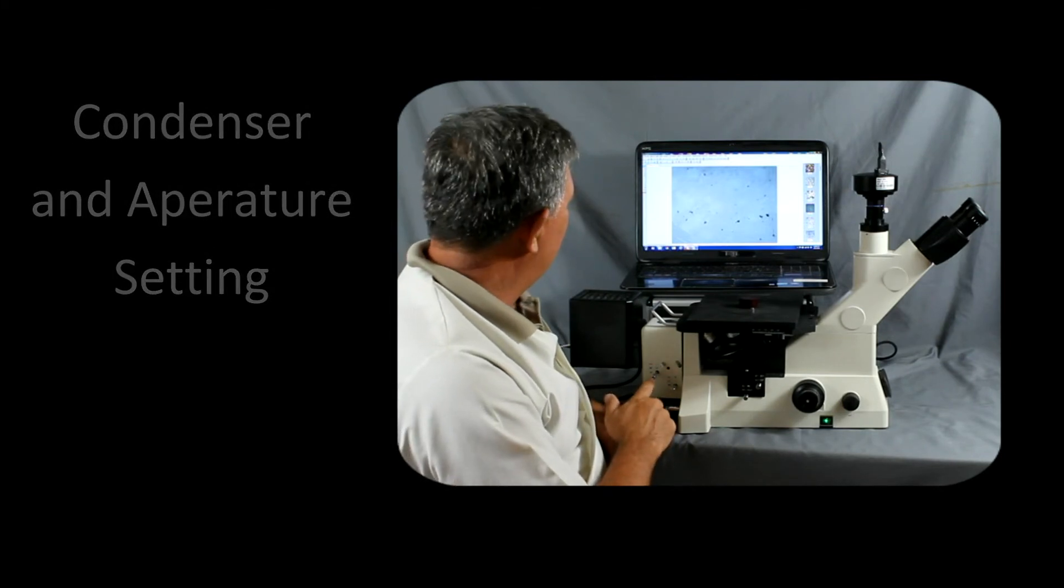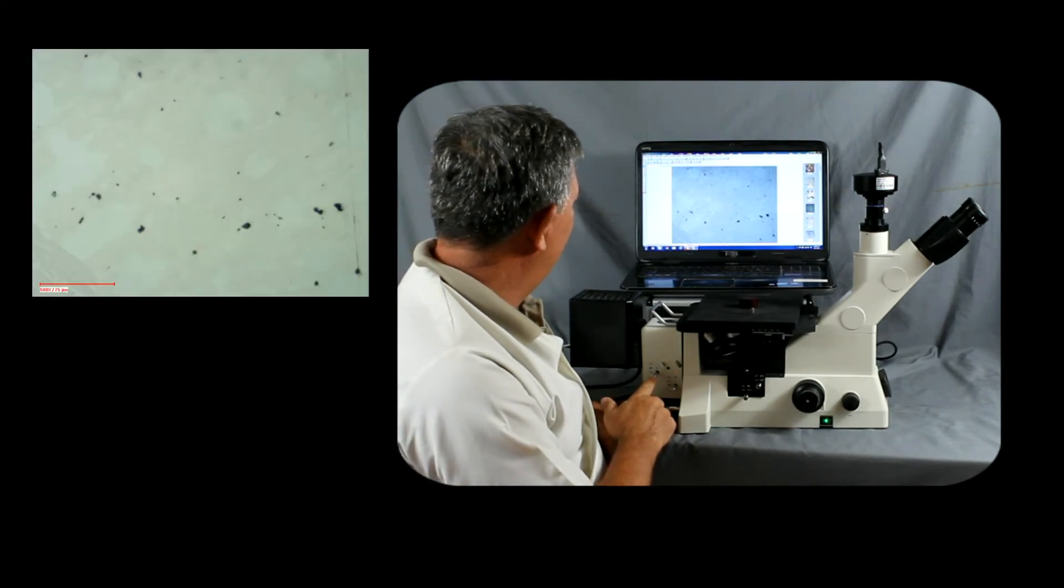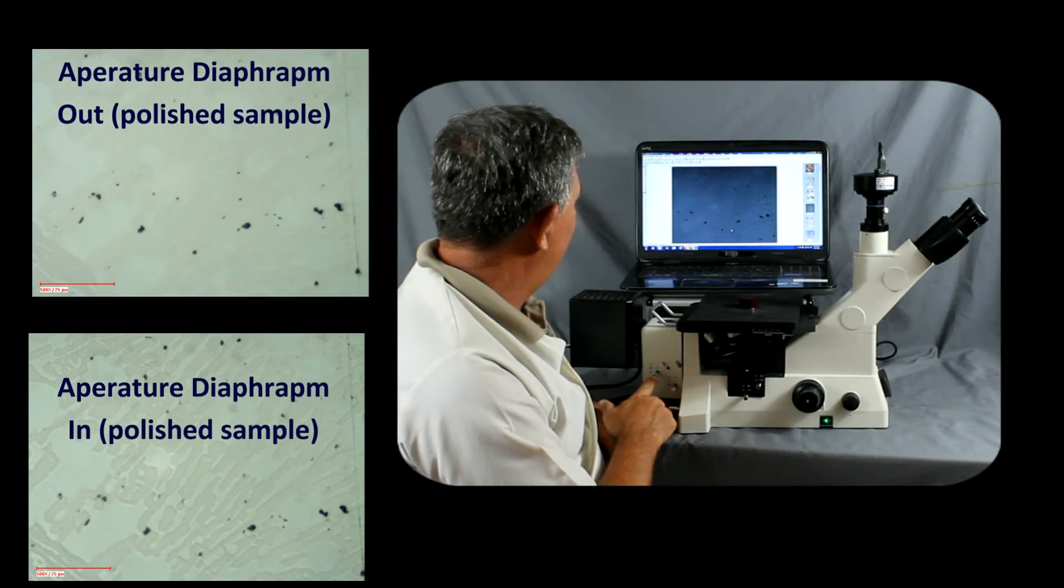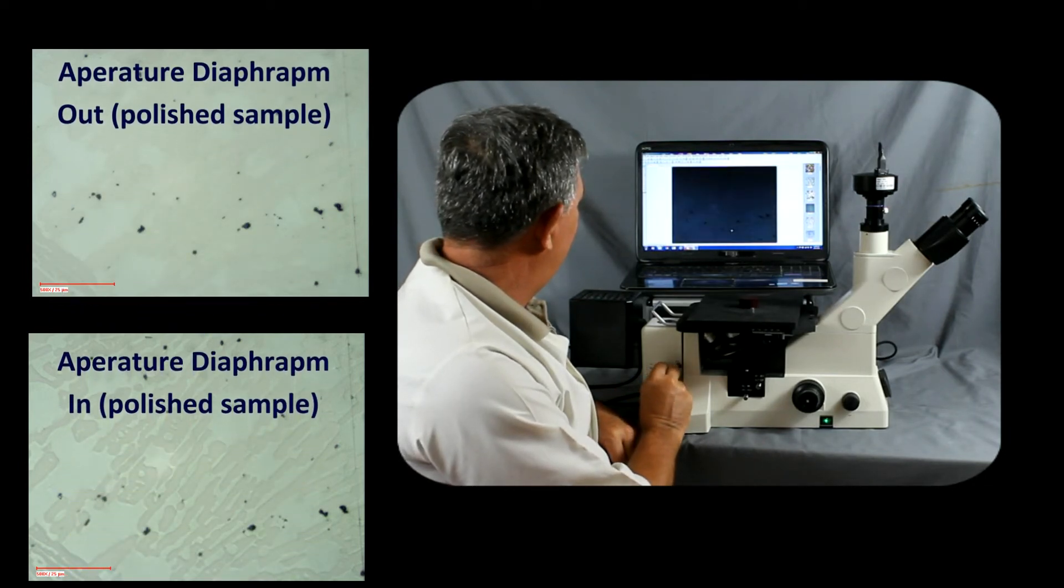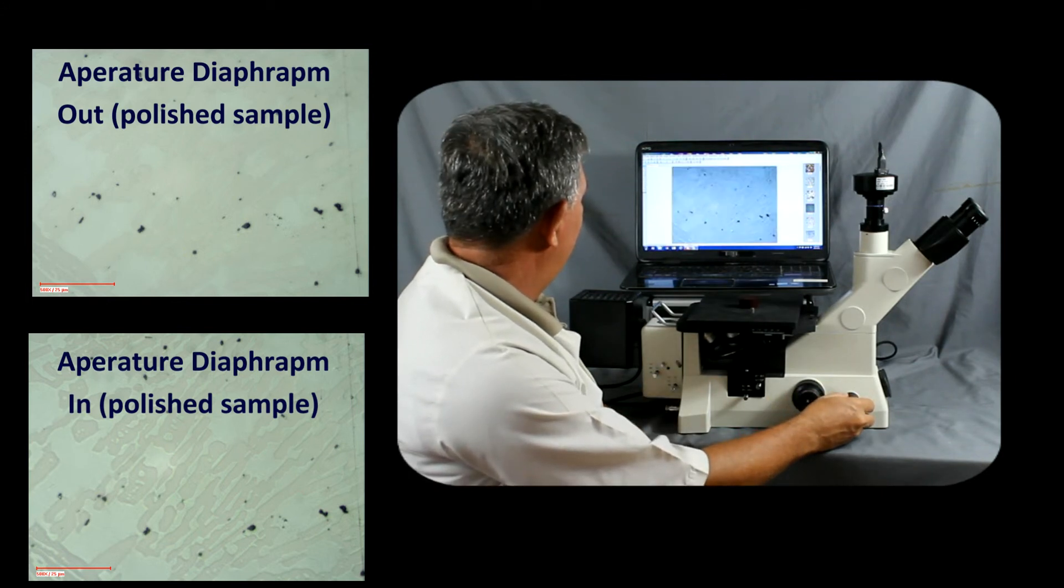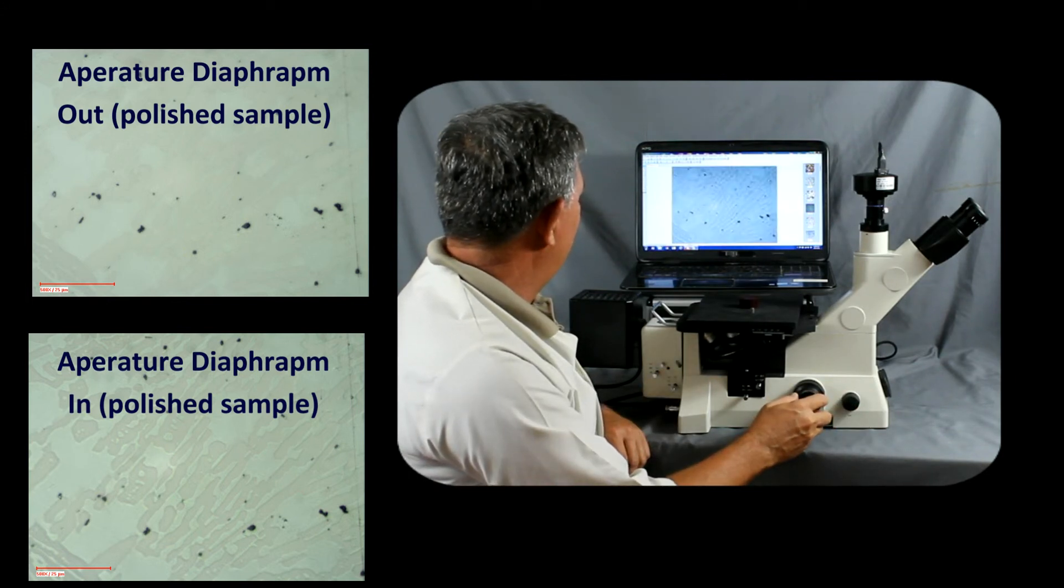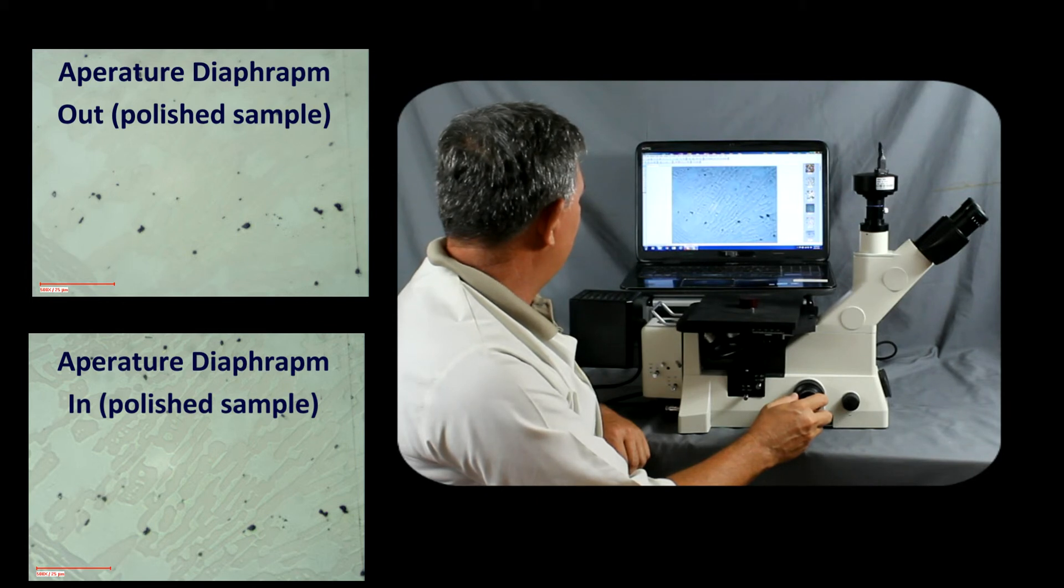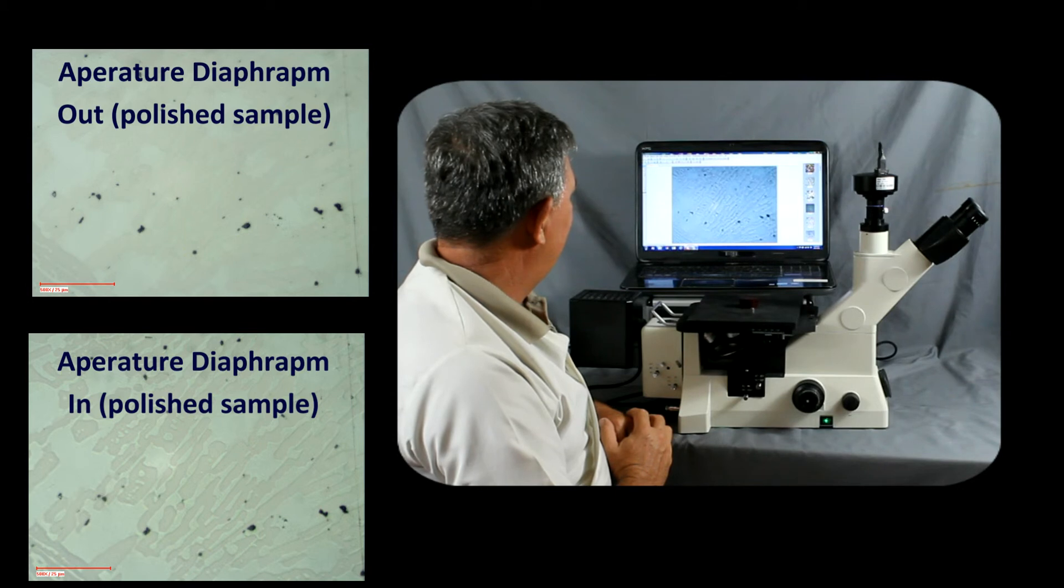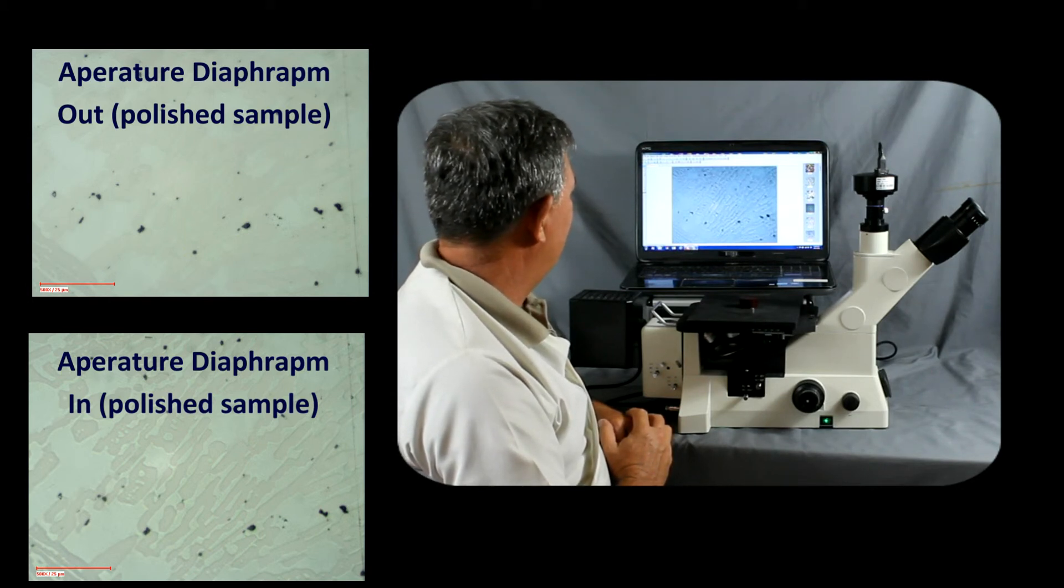The next thing we can do is we can adjust the aperture diaphragm to optimize the contrast. And you can see here that we actually are now bringing out features in the structure that we didn't see before. The aperture diaphragm is very useful for higher magnifications and increasing the contrast.